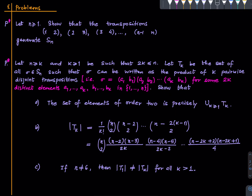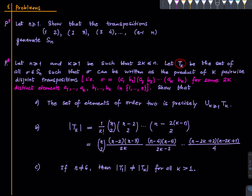Here are two problems, and I will be using both of them, so I have marked them with a star. The first one shows that while all transpositions generate Sₙ, you don't need all of them — just a small list suffices. The second problem is a counting problem. You fix a positive integer n ≥ 1 and some k in a valid range, and define Tₖ to be the set of all permutations whose cycle representation features exactly k transpositions and no other non-trivial cycles.